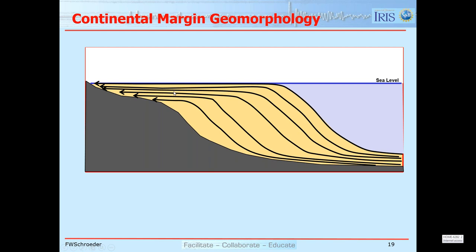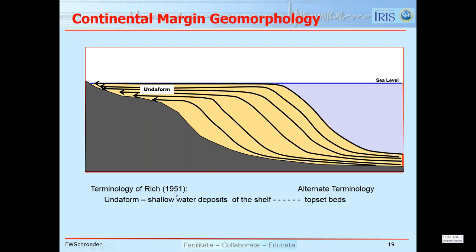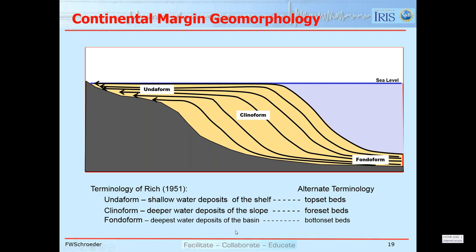There are geomorphologic terms commonly used, first developed by Rich in 1951. The undaform refers to shallow water deposits of the shelf — also called topset beds. The clinoform refers to deeper water deposits of the paleo-slope — also called foreset beds. The fondoform is the deepest water deposits out in the basin — the bottomset beds — representing the outermost part of this diagram.